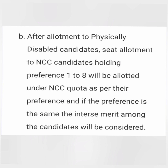After allotment to physically disabled students, seat allotment moves to Point B — NCC candidates. NCC candidates are given preferences from one to eight and have the second priority in terms of seat allotment.